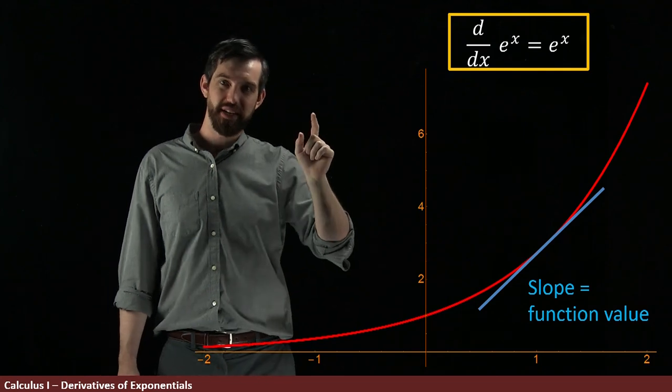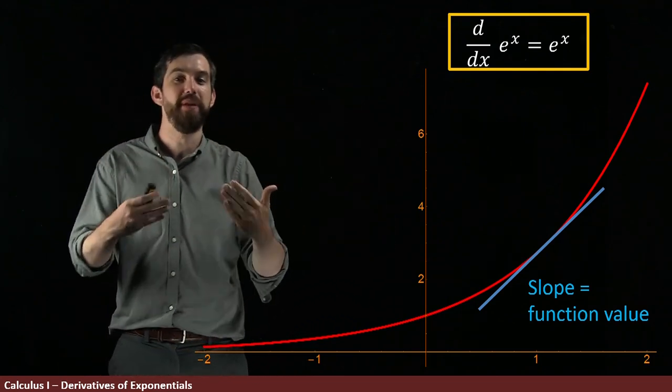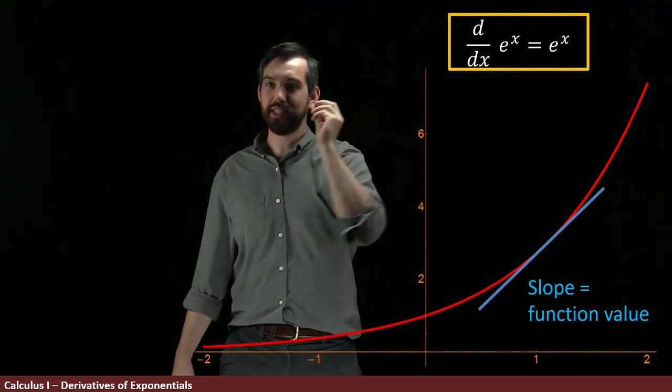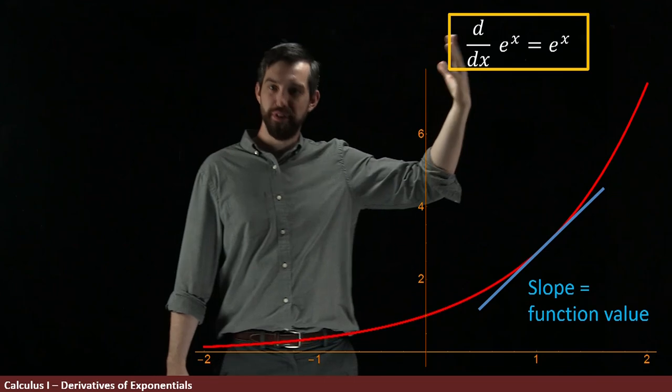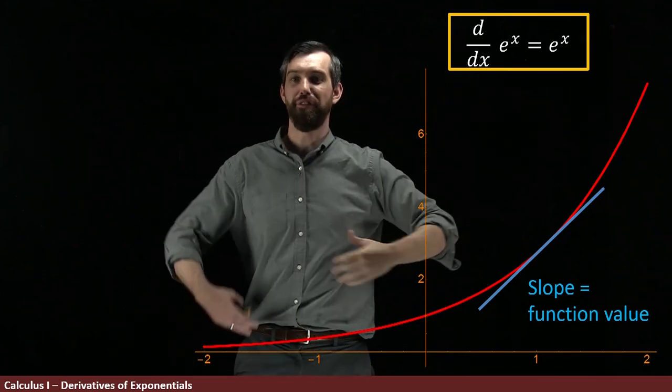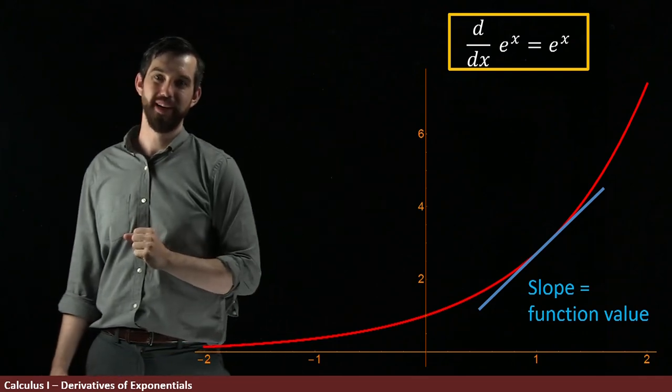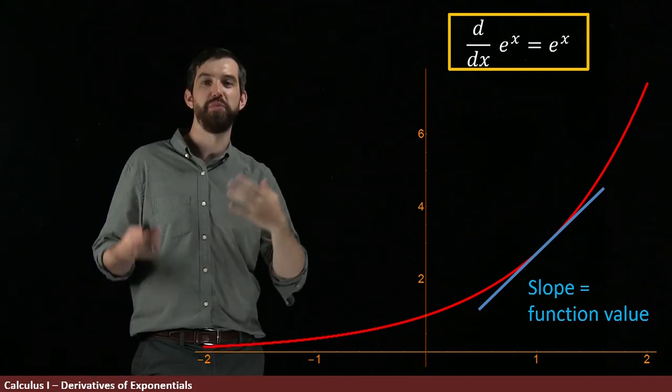e^x is defined—one way you can define it—to be the number such that the derivative of e^x is itself. We define e to be the number where this property is true. We're really going to like exponentials as we go forward in our course, and they have this really nice property.